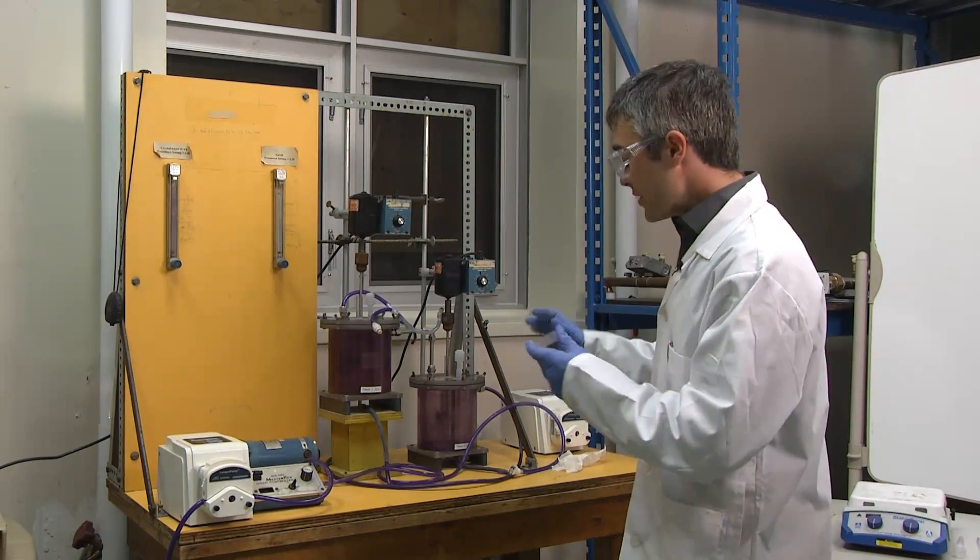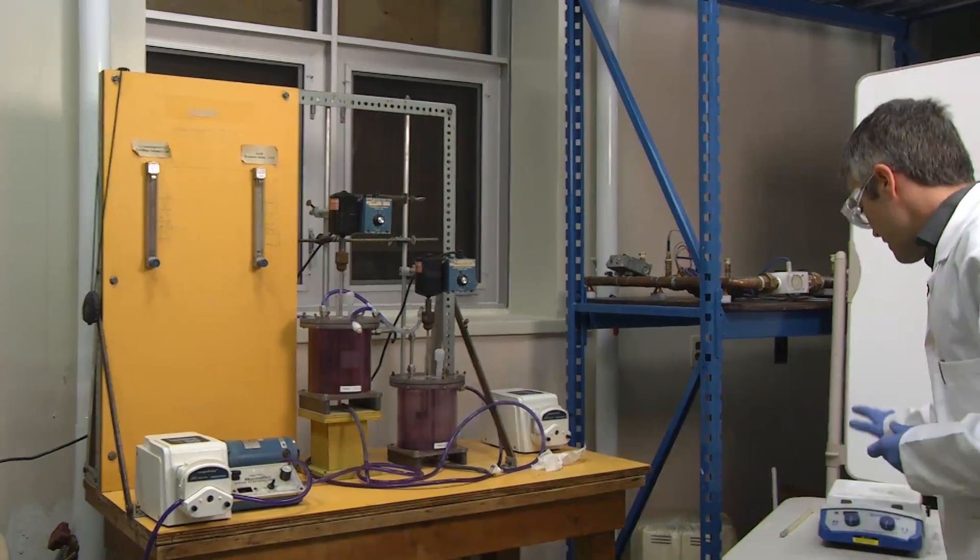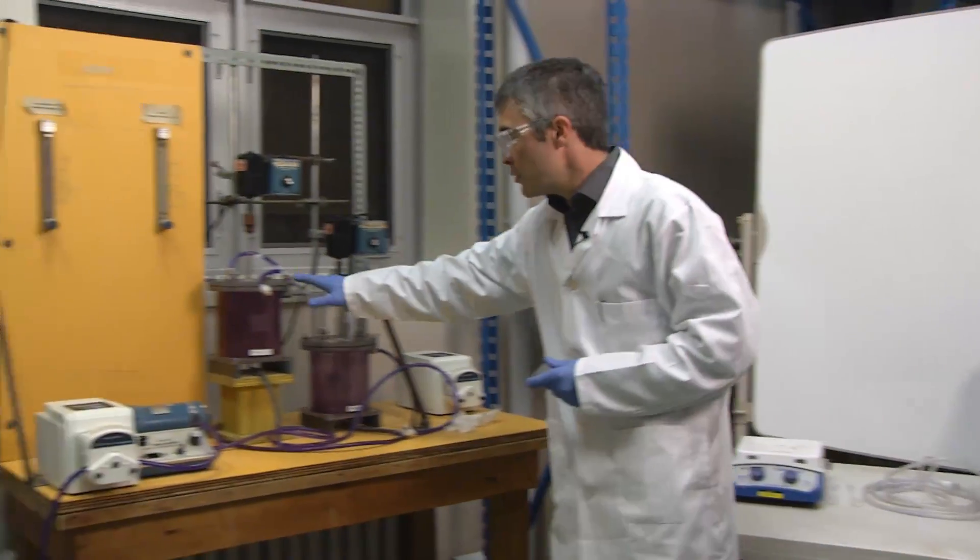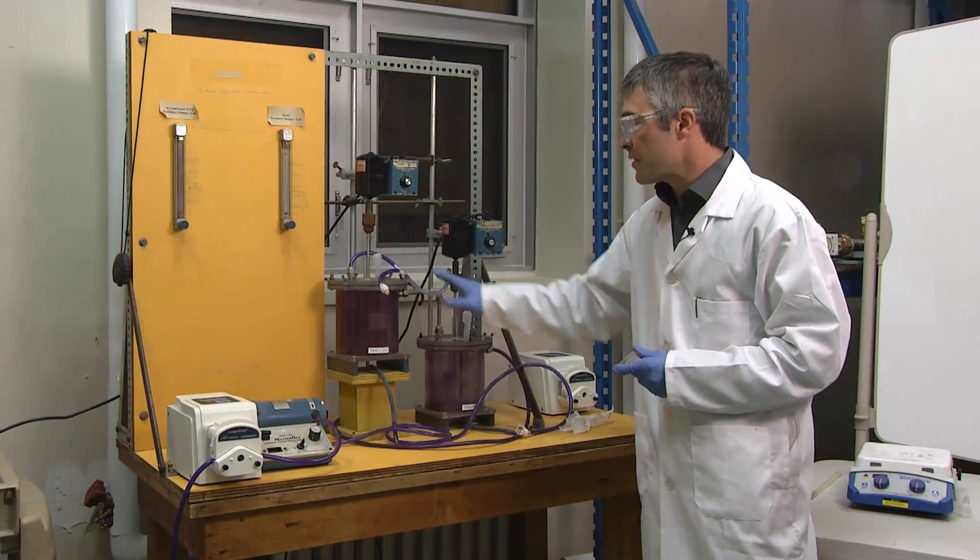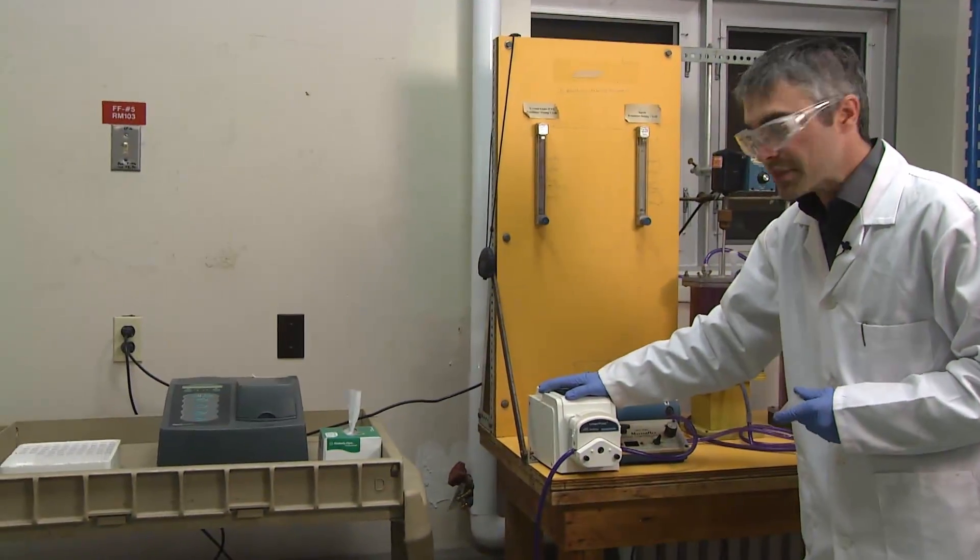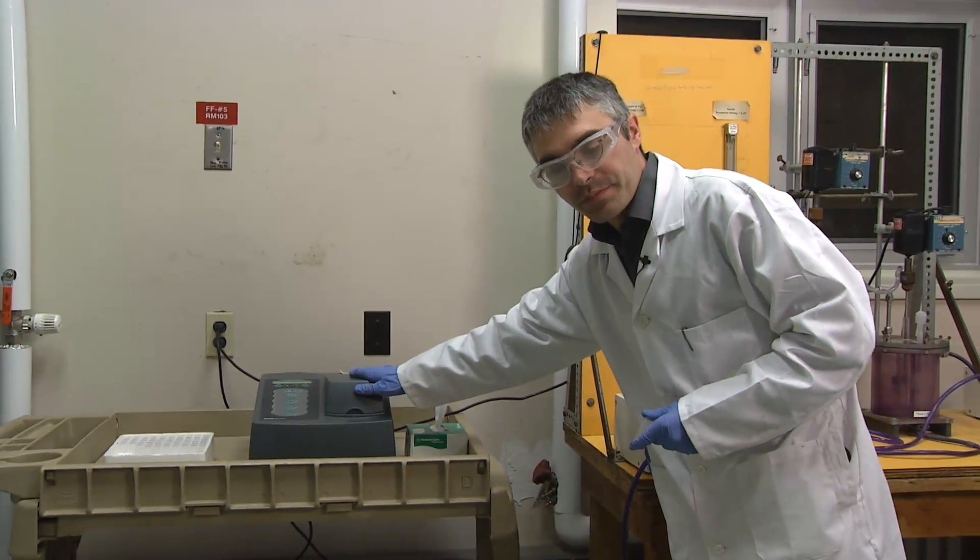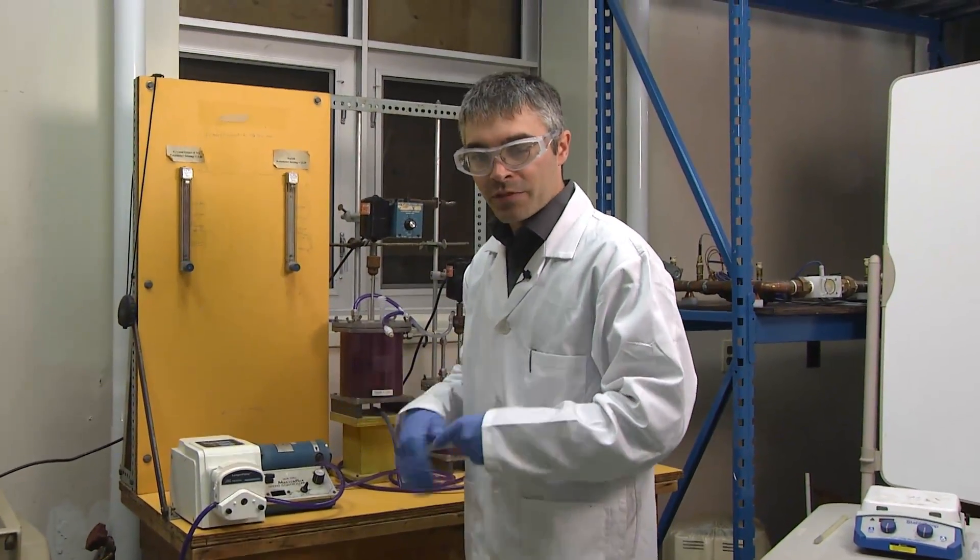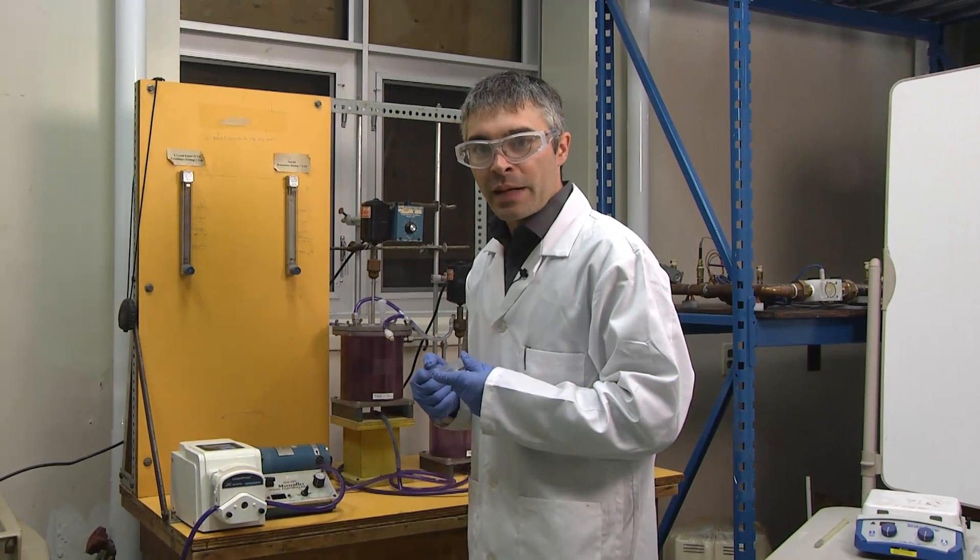Now, here's our apparatus. We have a stir plate for our batch reactor, two CSTRs with variable agitation, our peristaltic pumps, and our spectrometer. First, I'll go over each one of the laboratory objectives.